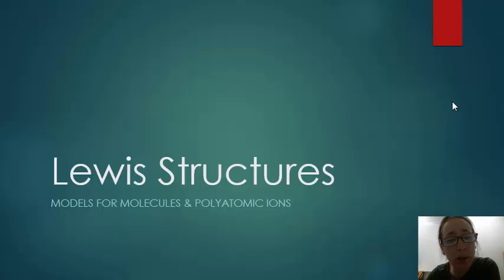Lewis structures, or Lewis dot structures, are models that chemists use to understand the bonding and the shape and the properties of molecules and polyatomic ions.